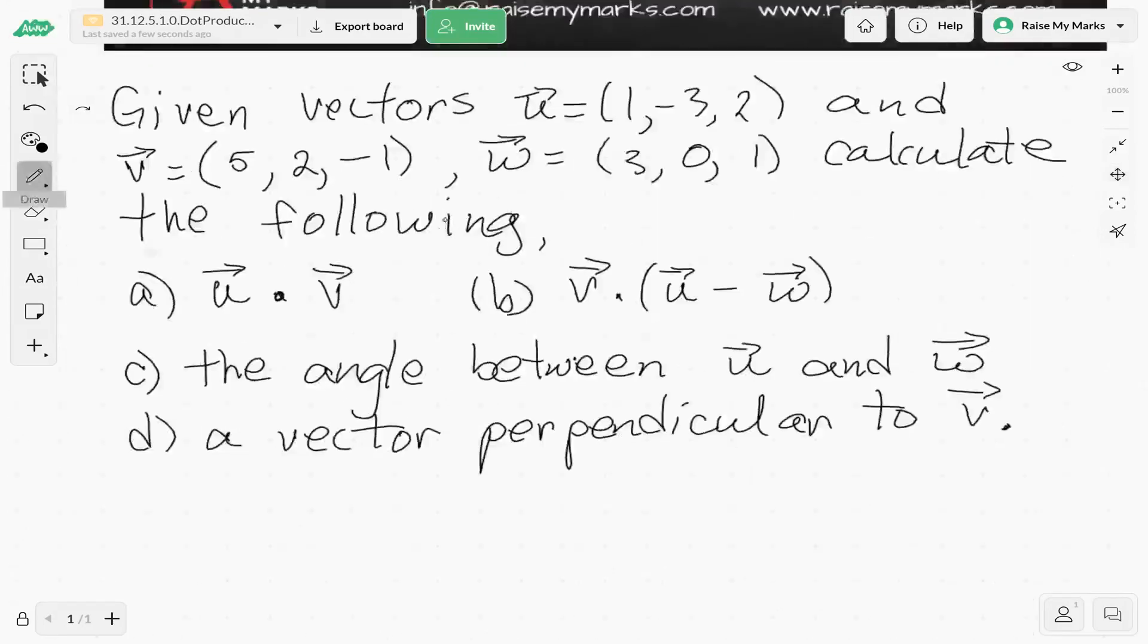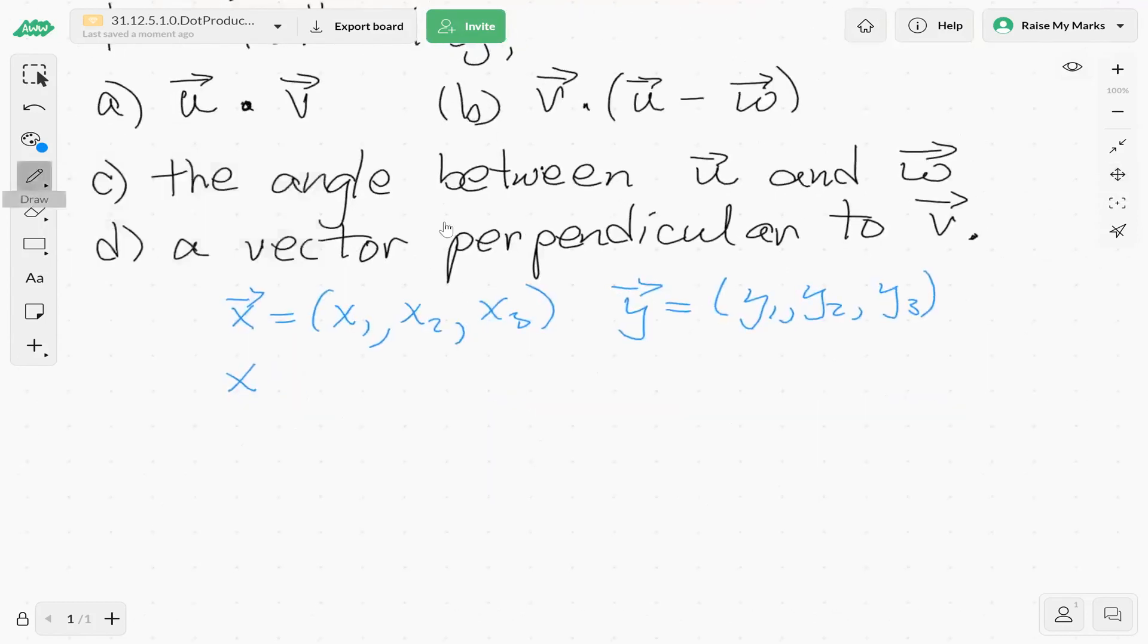So what is the dot product algebraically, or how is it defined? Let's consider two general vectors. x has coordinates x1, x2, x3, and the second vector y with coordinates y1, y2, and y3.